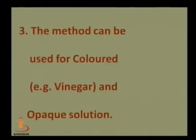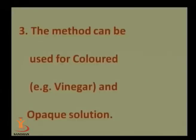Third, this method can be used for colored and opaque solutions. In the laboratory, if the solution is colored, we cannot judge the titration easily. For weak acid–weak base titrations — such as acetic acid with NaOH or acetic acid with NH₄OH — no proper indicator is available because each indicator has its own pH range where the color changes. In such cases, potentiometric titration gives a sharp, better result. For opaque solutions where we cannot see the reaction, potentiometry is the better approach.